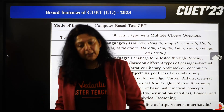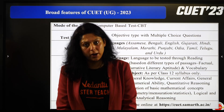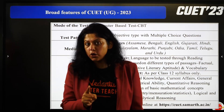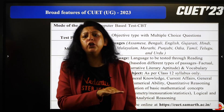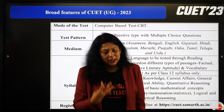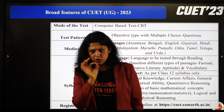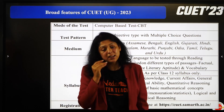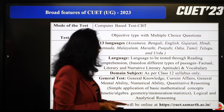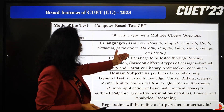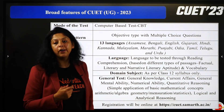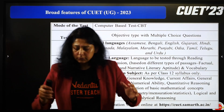CUET का exam CBT exam होता है, it is a computer-based test। Objective type होता है with multiple choice questions। 13 languages में test होता है, because they want everybody to be equal — the rural, urban students, the students who studied in local languages — everybody के पास access होना चाहिए top quality education का। Languages include Assamese, Bengali, English, Gujarati, Hindi, Kannada, Malayalam, Marathi, Punjabi, Tamil, and Telugu।